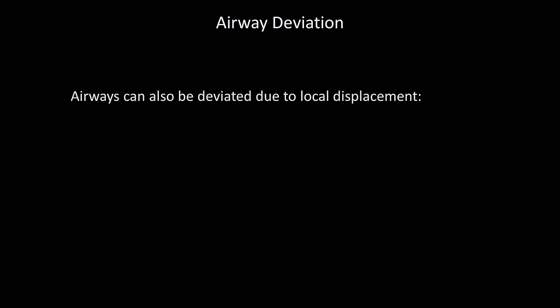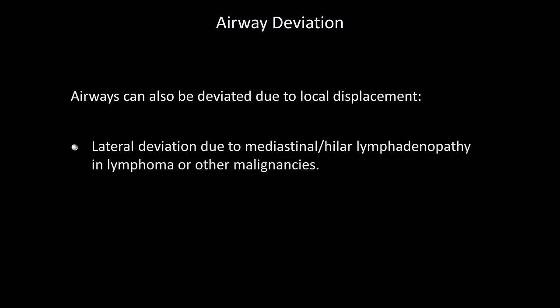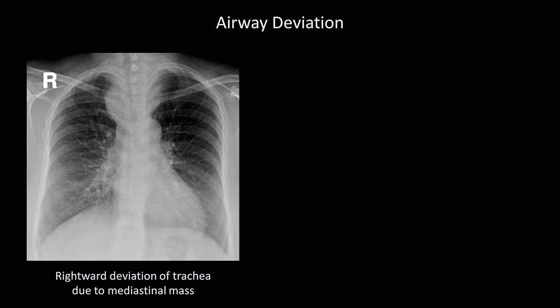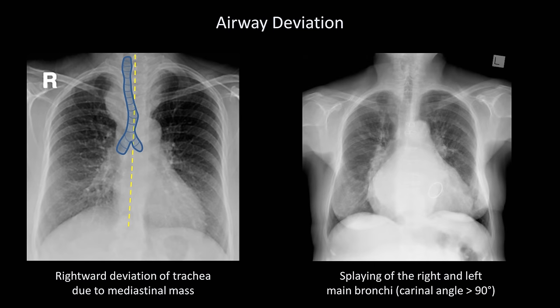Airways can also be deviated due to local displacement. There can be lateral deviation from mediastinal or hilar lymphadenopathy in lymphoma or a mass from other malignancies, and there can be splaying of the right and left bronchi by extreme left atrial enlargement. Here is an example of rightward deviation of the trachea due to a large mediastinal mass, which turned out to be an enormous goiter. And here is an example of splaying of the right and left main bronchi from left atrial enlargement, with a carinal angle well above the normal cutoff of 90 degrees.